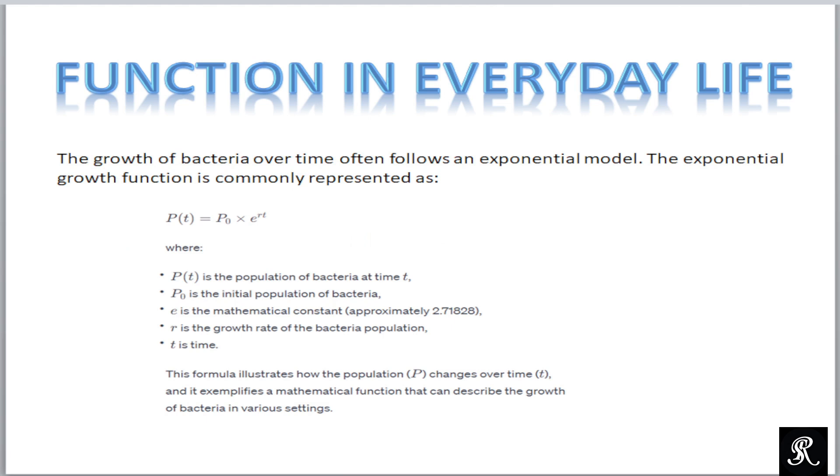The growth of bacteria over time often follows an exponential model. The exponential growth function is commonly represented as P(t) = P₀ × e^(rt), where P(t) is the population of bacteria at time t, P₀ is initial population of bacteria, e is the mathematical constant with approximated value 2.718, r is the growth rate of the bacteria population, and t is the time. This formula illustrates how the population changes over time and it exemplifies a mathematical function that can describe the growth of bacteria in various settings.